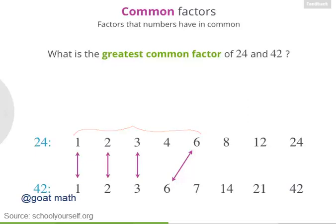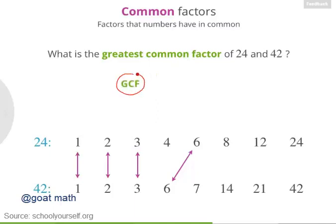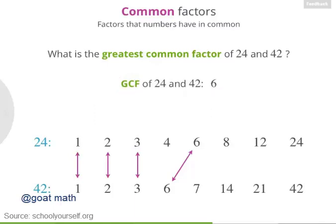So then what's the greatest common factor of 24 and 42? Of these common factors, which is the biggest number? Excellent! Now the term greatest common factor shows up a lot in algebra, so you'll commonly hear it referred to as the abbreviation GCF. So as you found, the GCF of 24 and 42 is 6.